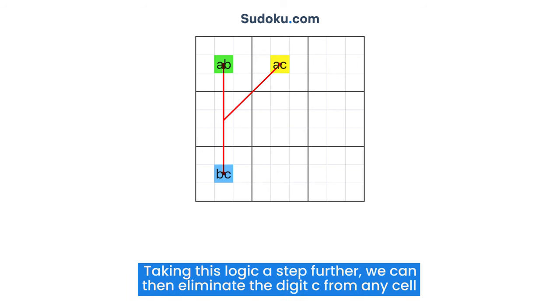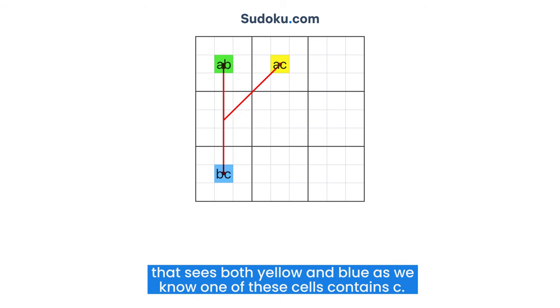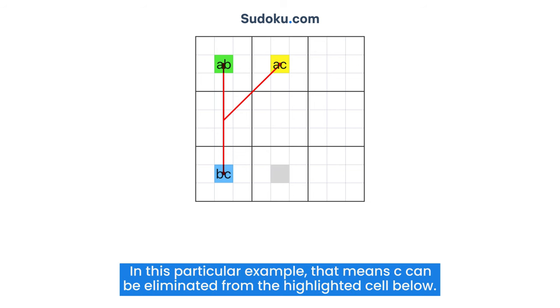Taking this logic a step further, we can then eliminate the digit C from any cell that sees both yellow and blue, as we know one of these cells contains C. In this particular example, that means C can be eliminated from the highlighted cell below.